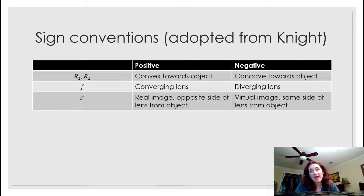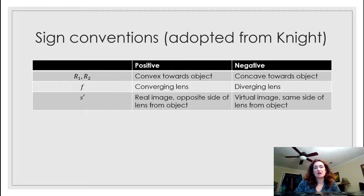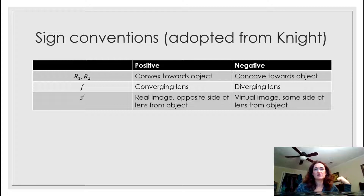R1 and R2 are going to be negative if they're concave towards the object — that is, if they bulge away from the object. When you use the lens maker's equation, you get the focal length, and the focal length F can be either positive or negative. Students often get confused about this because in ray diagrams for thin lenses, you draw a focal length on either side of the lens.